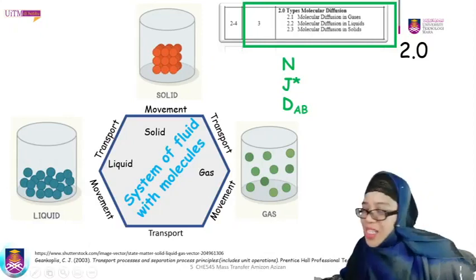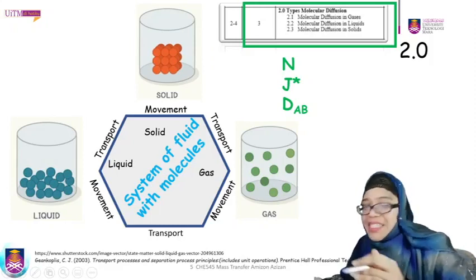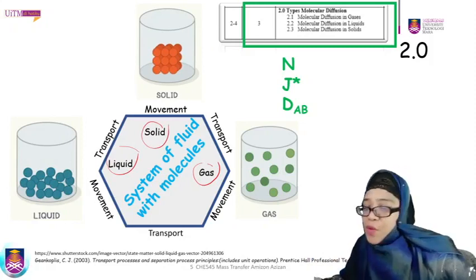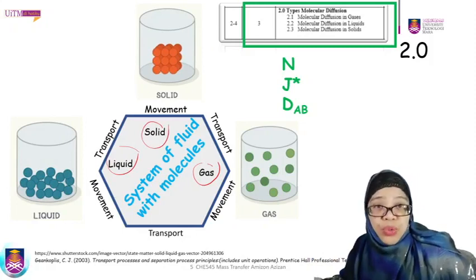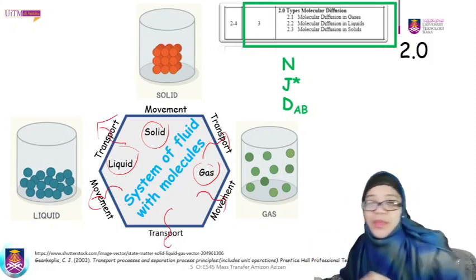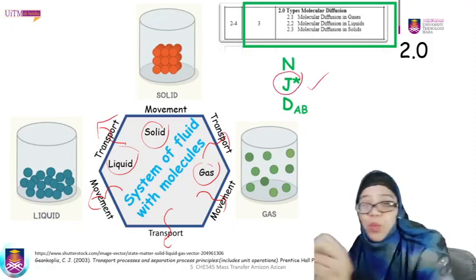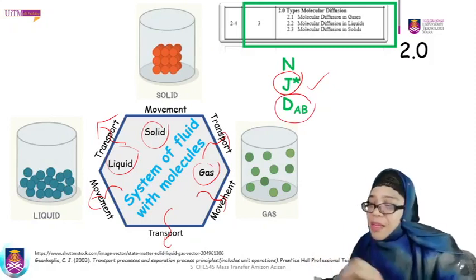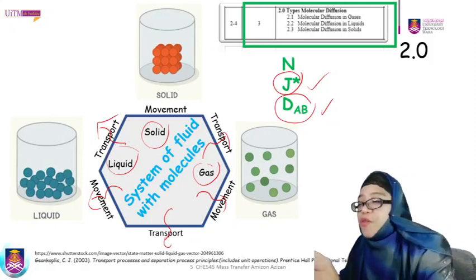Let us look at this slide showing the system of fluids with molecules. We have three kinds of molecules as learned last week: gas, liquid, and solid. For each of the fluids, molecules may undergo transport from one region to another due to the concentration gradient. We have seen the definition of Fick's diffusion law using the symbol J*, and in that equation we also saw DAB, which is the diffusivity, or diffusion coefficient of A through B.